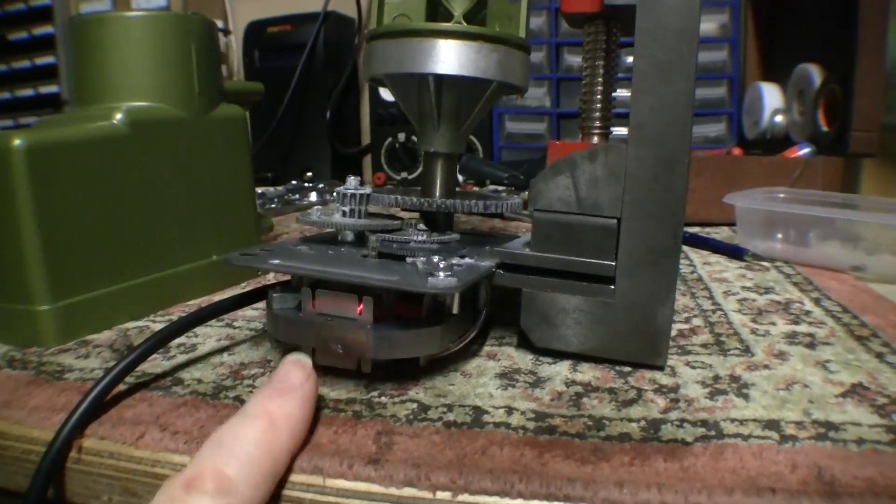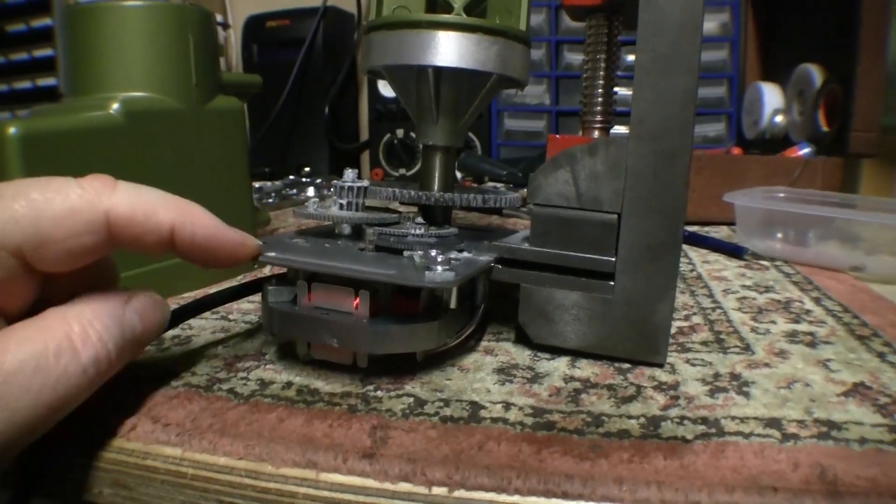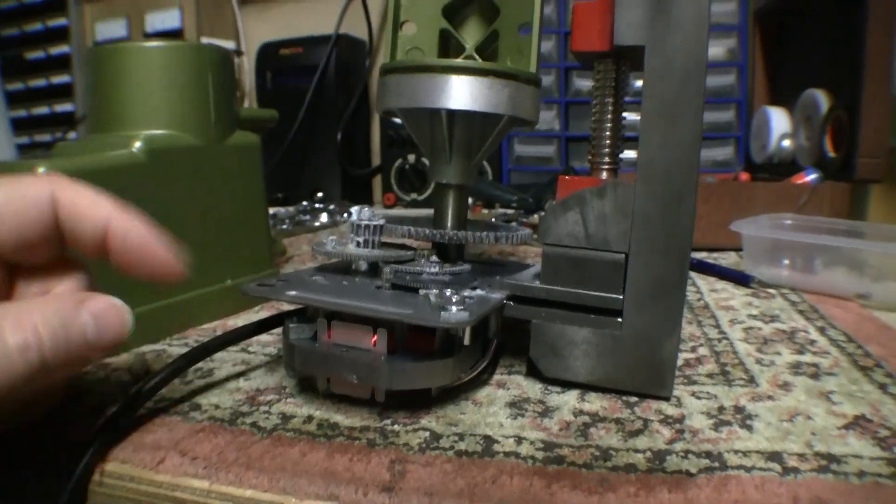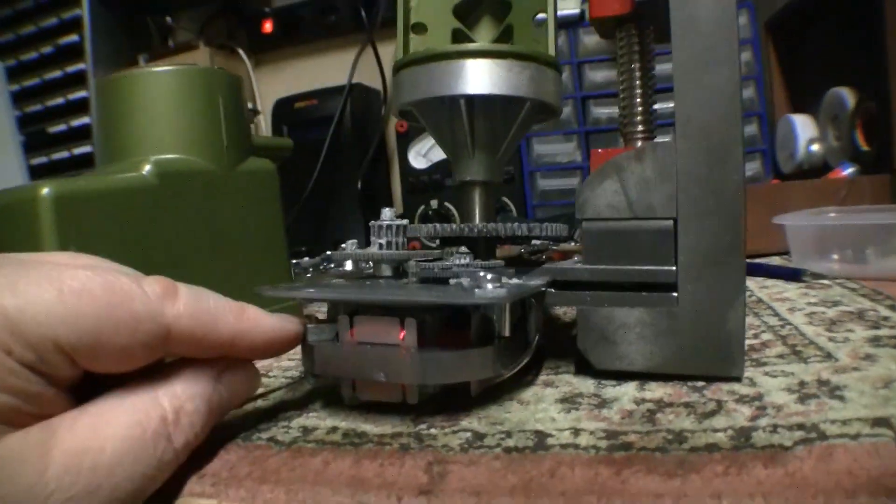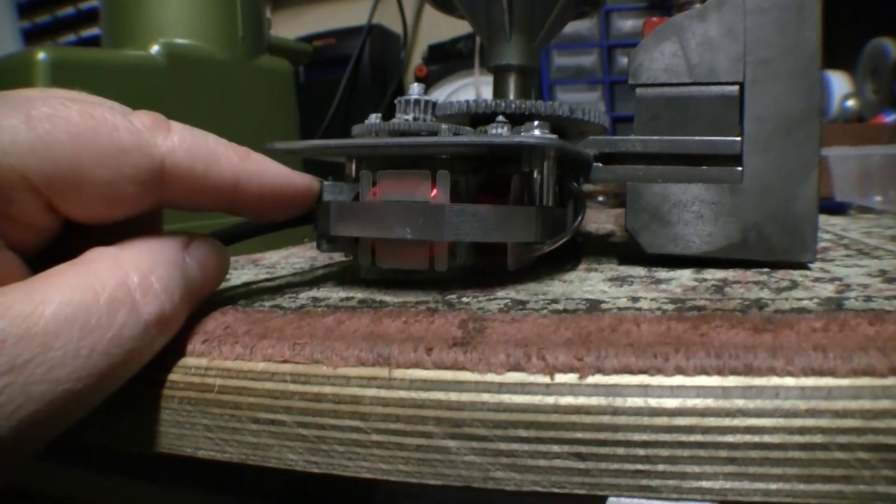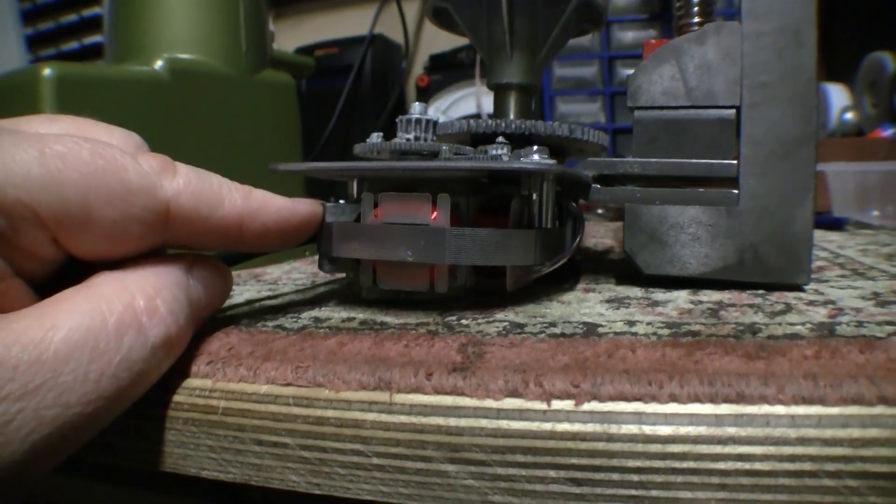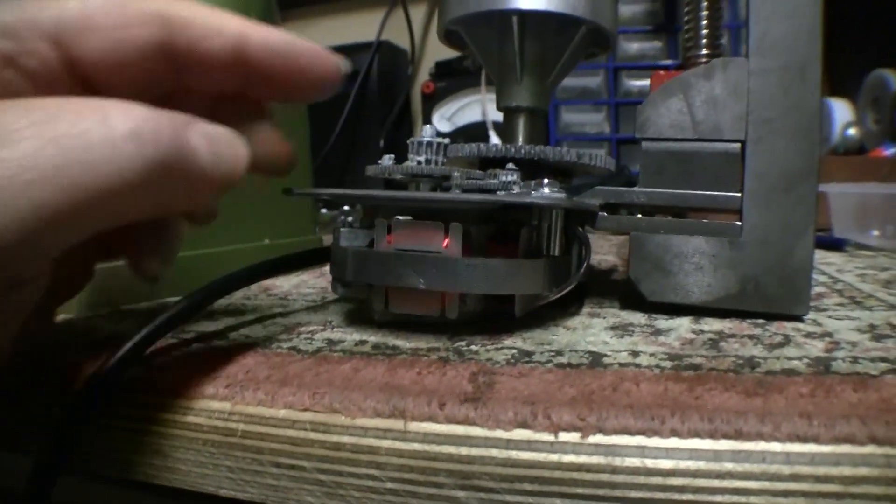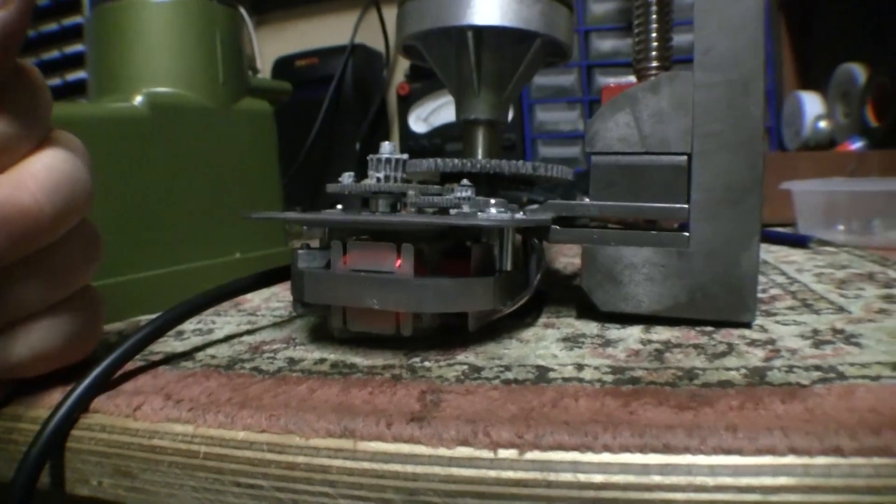So I took the motor off the mounting plate here. And the first thing I noticed is the two plates either side, which hold in the bearings for the rotor, were actually loose. So I tightened them up and made sure everything was aligned and not jamming up.